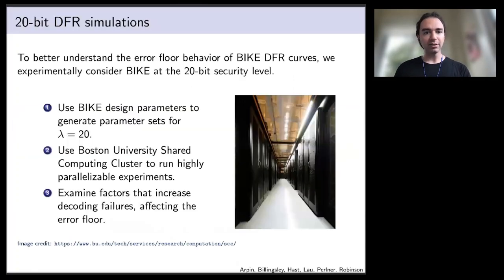So let's talk about our approach now. Our approach is to analyze decoding failure rates in detail at the 20-bit level and carry out these experiments. The cryptographically relevant scale starts at 128-bit, so this is much smaller scale, which allows us to carry out certain analyses that are infeasible at the full cryptographically relevant scale. We use BIKE design parameters to generate our parameter sets for a security level of lambda equals 20. We use Boston University's shared computing cluster, a heterogeneous Linux-based computing cluster, to run highly parallelizable experiments. Then we analyze these decoding failures in detail to see what factors are contributing to these decoding failures and what implications that has for the error floor.